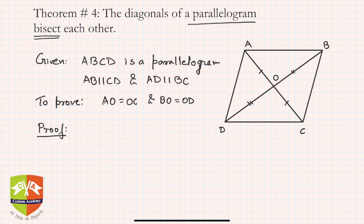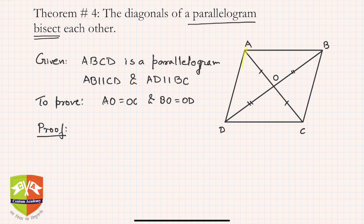Whenever we have to prove equality of two sides, one way of doing it is by finding congruences. If we are able to prove that the given parts are corresponding parts of congruent triangles, then our job is done. So let's figure out which two triangles to take so that all the components to be proved are included in them.